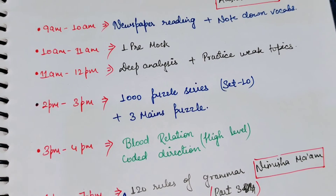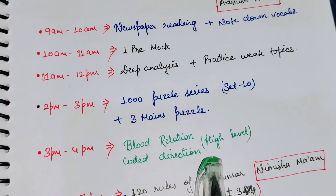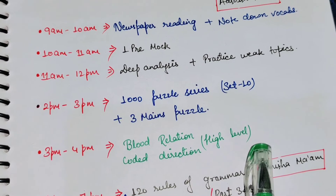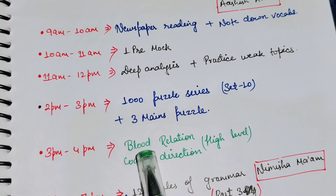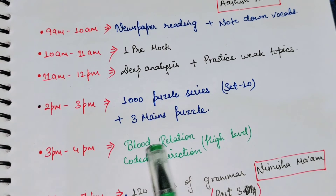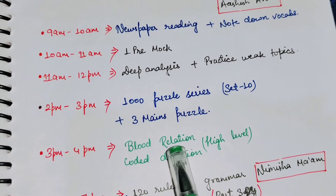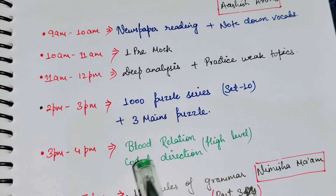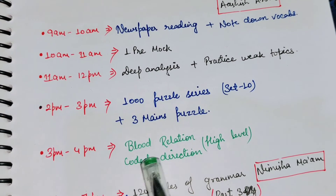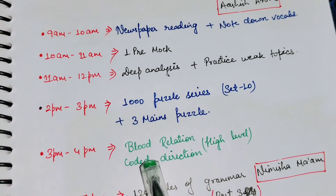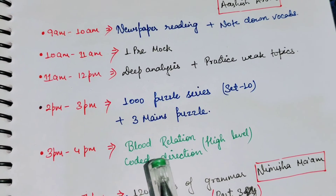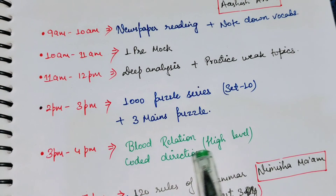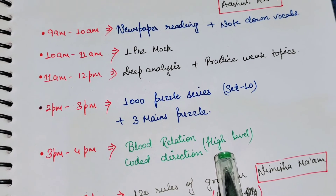From 3 PM to 4 PM, you have to do blood relation plus direction questions at a high level. Today we have to do coded inequality questions, coded direction questions — these are the types of questions asked in mains.